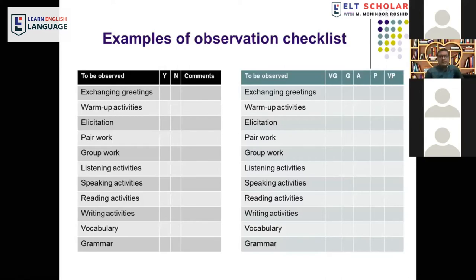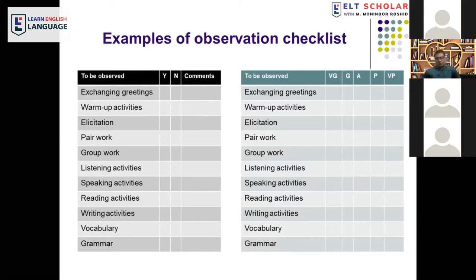If you write notes instead of tick marks, those notes become qualitative data, making it an observation guideline rather than a checklist. The observation guideline helps guide what you need to observe, and based on your observations you write notes — about pair work, group work, timing, quality, problems the teacher faced. These notes are your qualitative data.